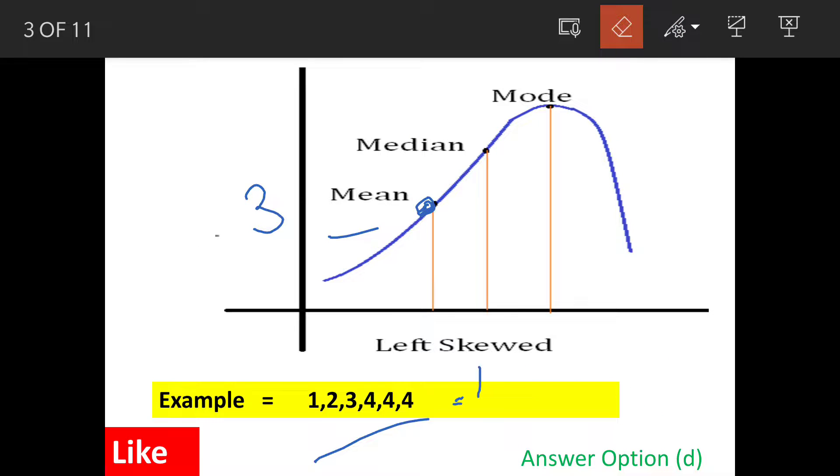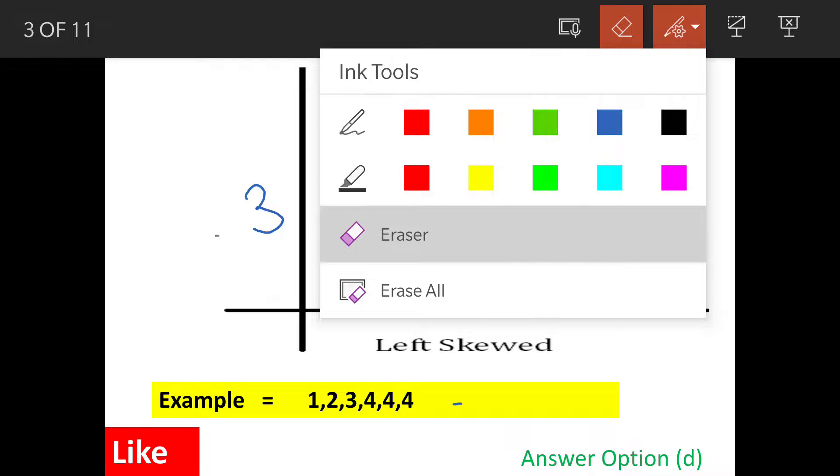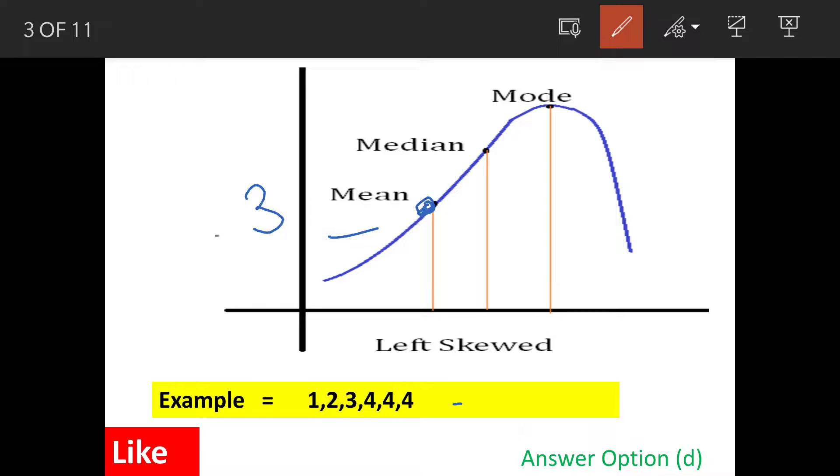I will erase this. Now the median. The median is the middle numbers. What are middle numbers? 3 and 4. If there are 7 numbers then the middle number would have been the median, but since there are 6 numbers, we will take average of 3 and 4. 3 plus 4 divided by 2. Our median is actually 3.5.